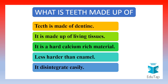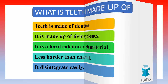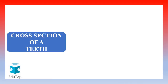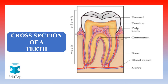The teeth is made up of dentine. It is made up of living tissues and it is a hard calcium-rich material, but it is not as hard as the enamel and it can disintegrate very easily under the effect of acids. The figure on your screen shows the cross-section of teeth with well-labeled parts that we have discussed.